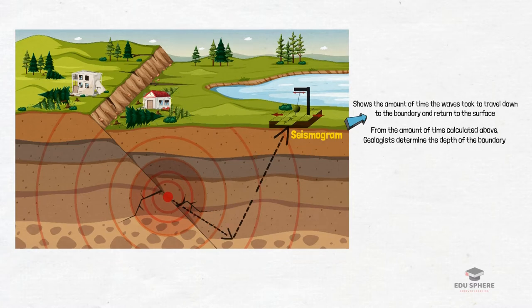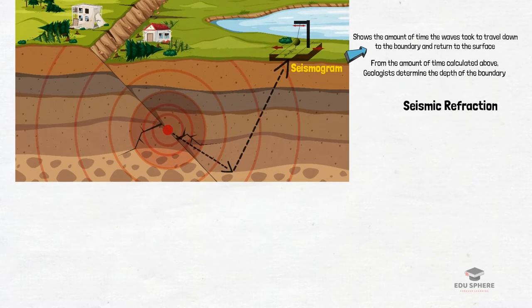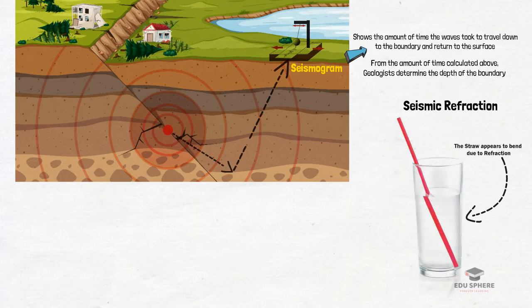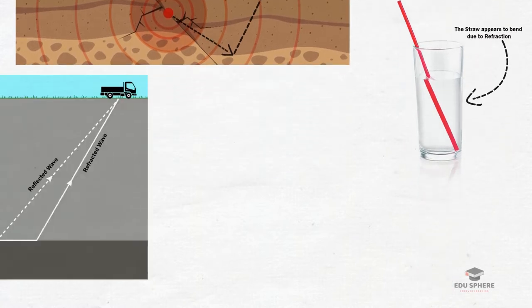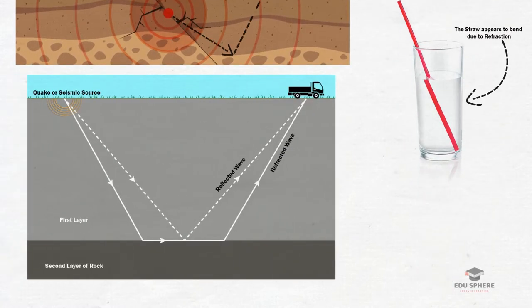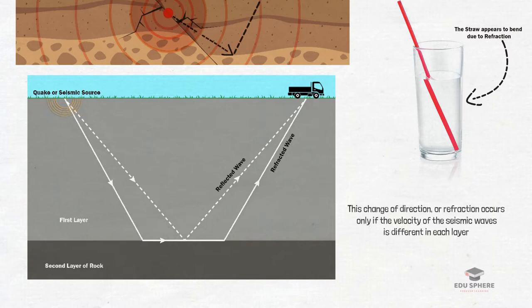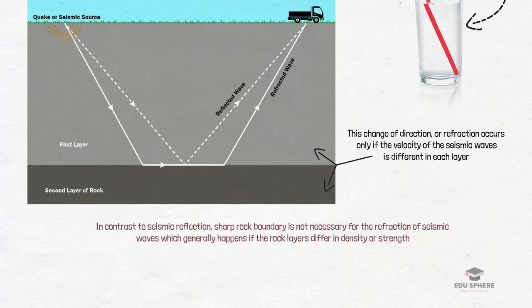Another method used to locate rock boundaries is the study of seismic refraction, which is the bending of seismic waves as they pass from one material to another with varying density. This is similar to the way that light appears to sharply bend a straw resting in a glass of water. As a seismic wave crosses from one rock layer to another, it changes direction as shown in this figure. This change of direction or refraction occurs only if the velocity of seismic waves is different in each layer. Do remember that, in contrast to seismic reflection, sharp rock boundary is not necessary for the refraction of seismic waves.